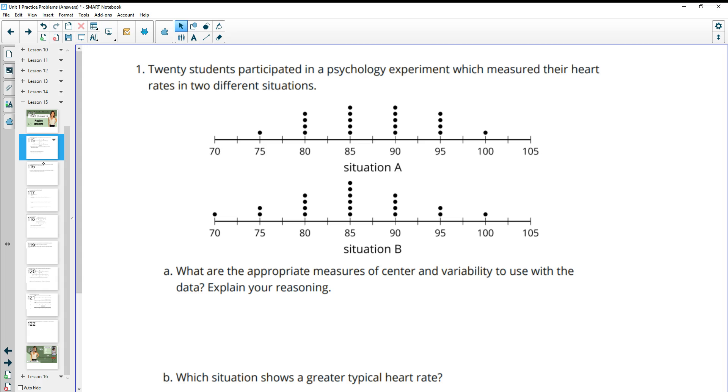Number one. Twenty students participated in a psychology experiment which measured their heart rates in two different situations shown in these two dot plots. What are the appropriate measures of center and variability to use with this data? Explain your reasoning.